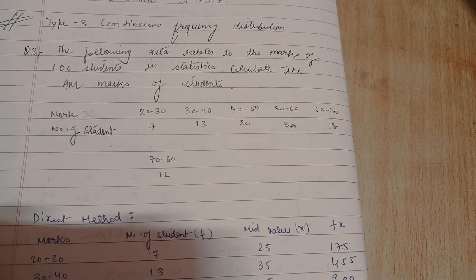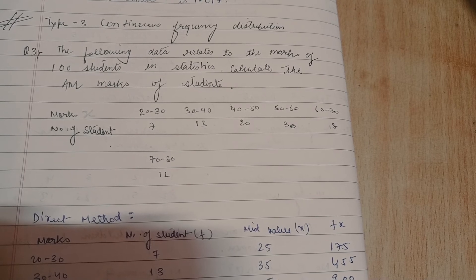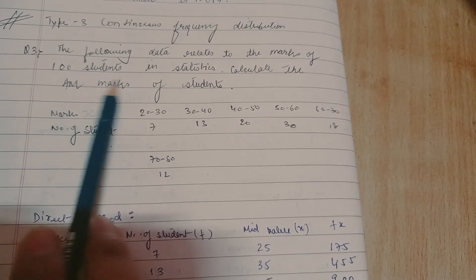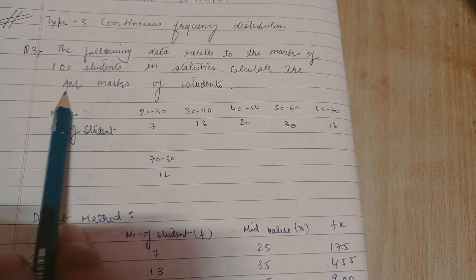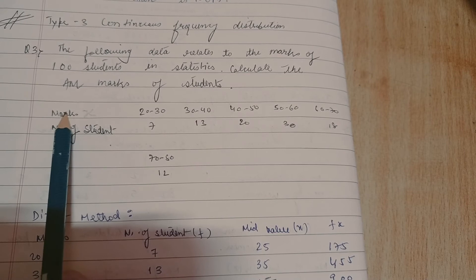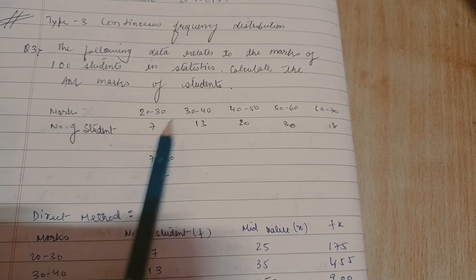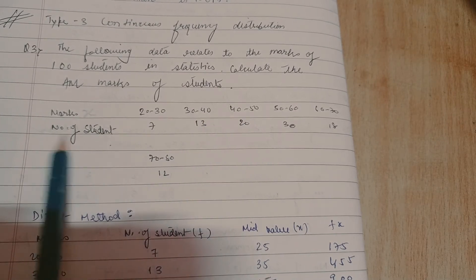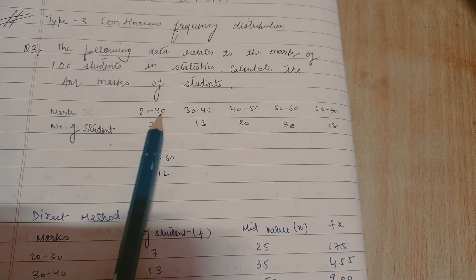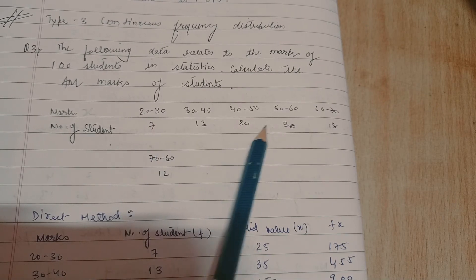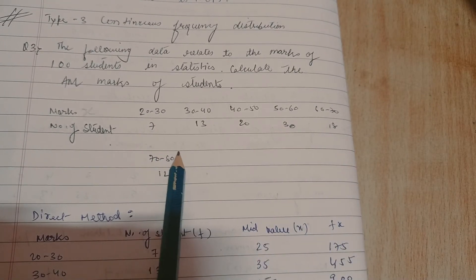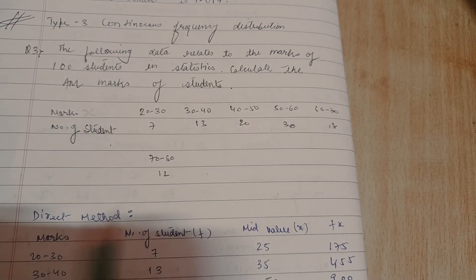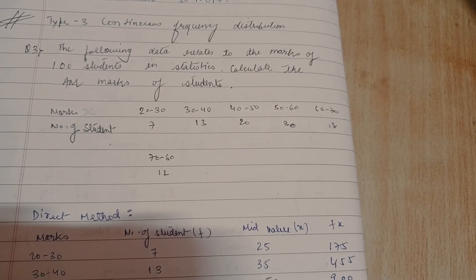The third type of problem on mean is continuous frequency distribution. The following data relates to the marks of 100 students in statistics. Calculate the arithmetic mean marks of the students. The x label is marks and it is given in the form of continuous frequency, class intervals 20 to 30, 30 to 40, 40 to 50 and the number of students is the frequency. Now we would be solving this by direct method.